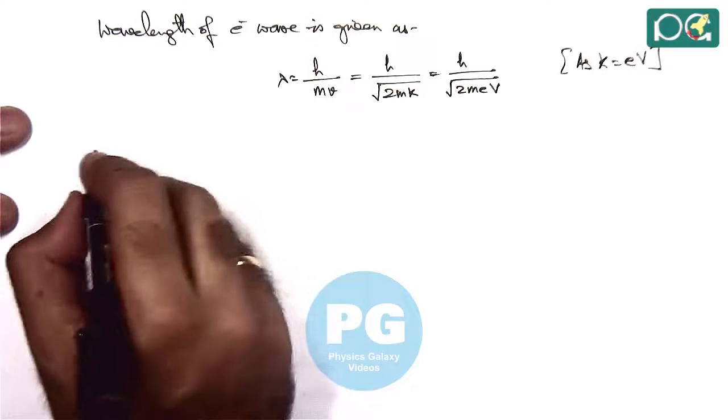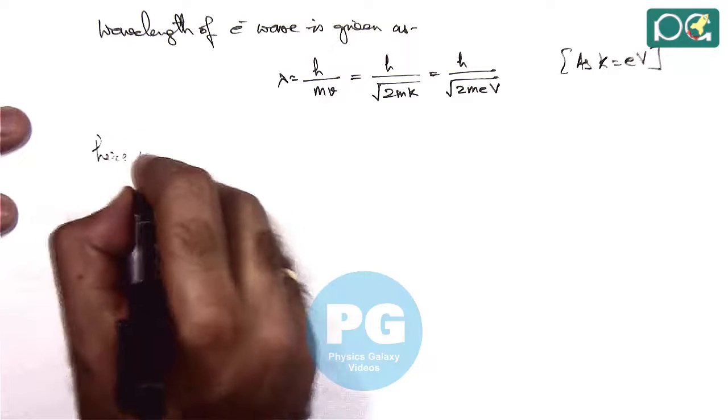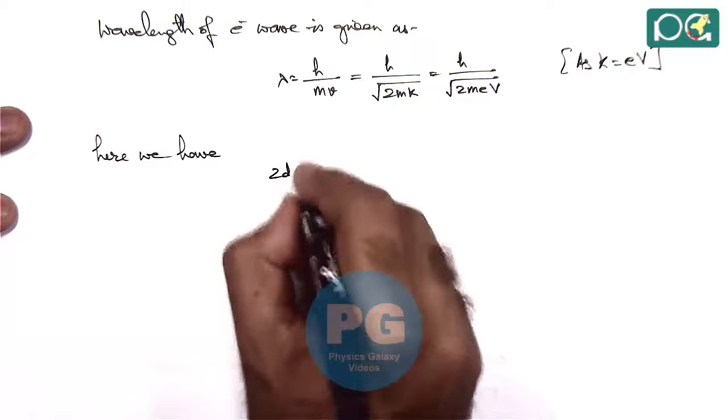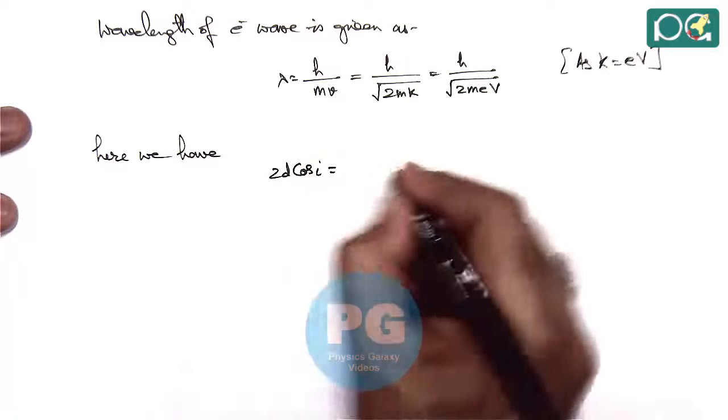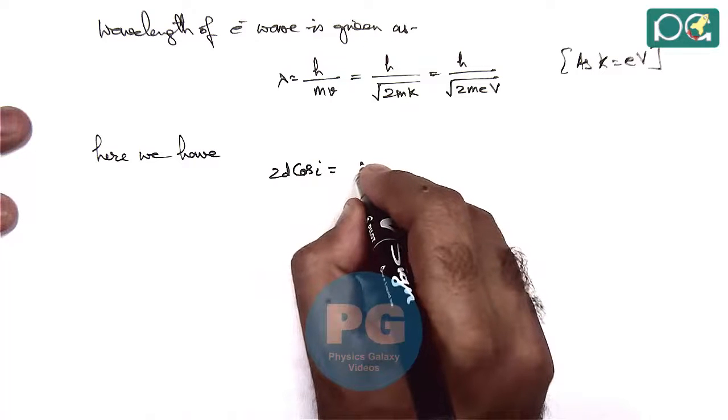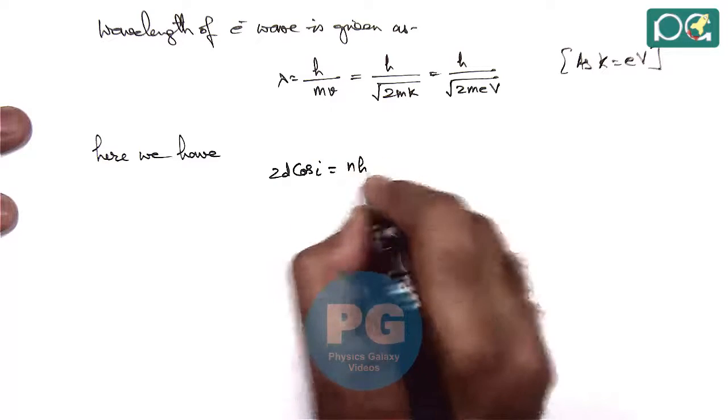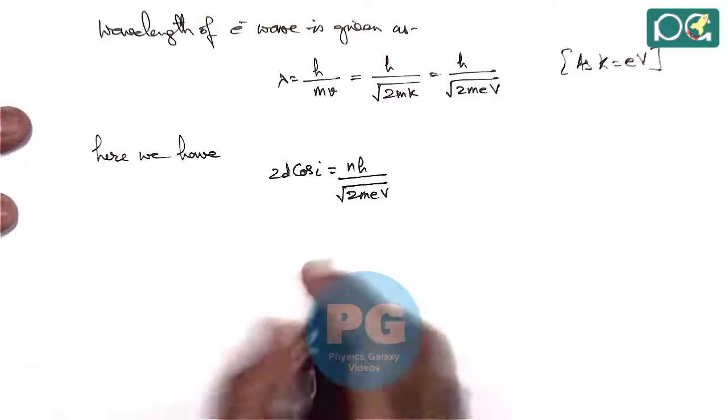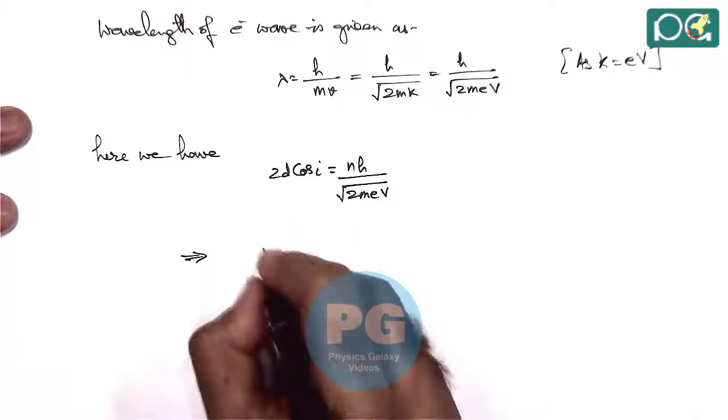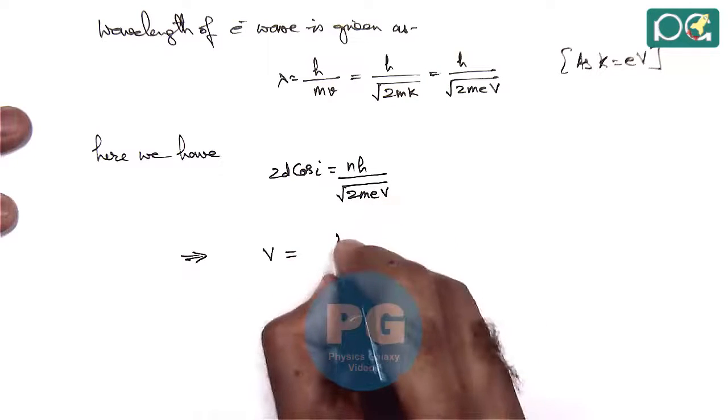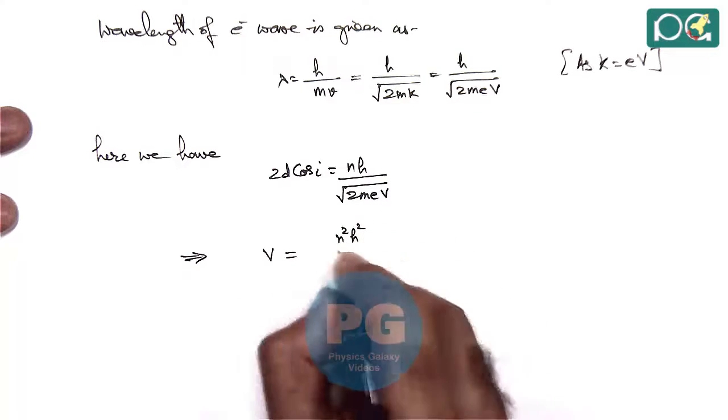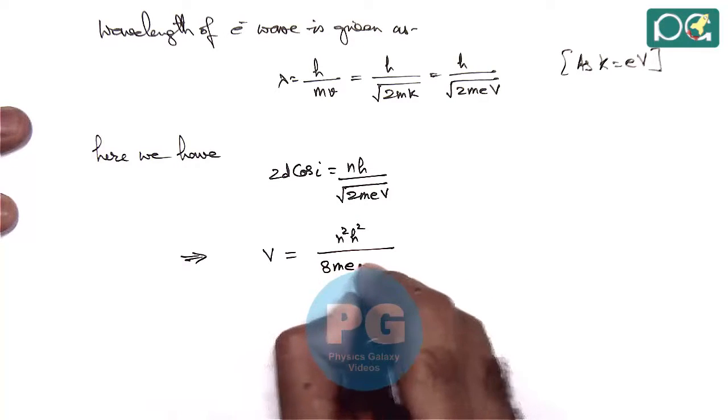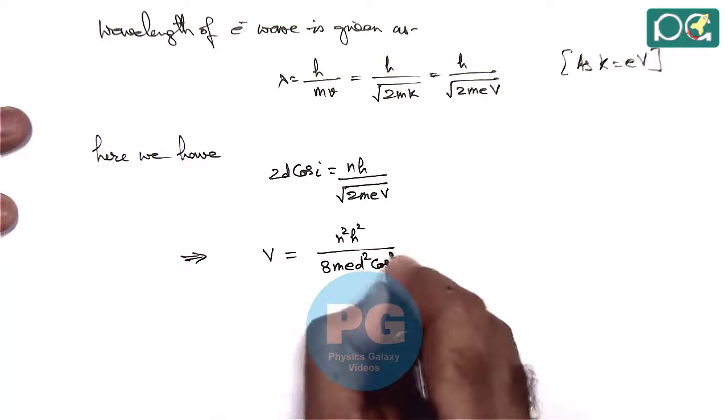So here we have, we can write 2D cos I is equal to N times H by root 2MEV. If we calculate the potential difference, V can be given as N square H square by 8MED square cos square I.